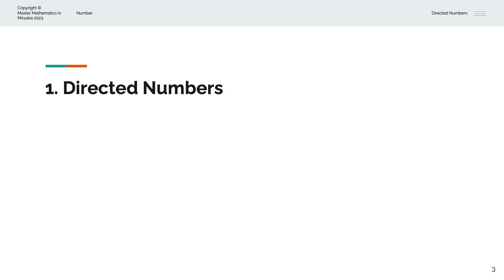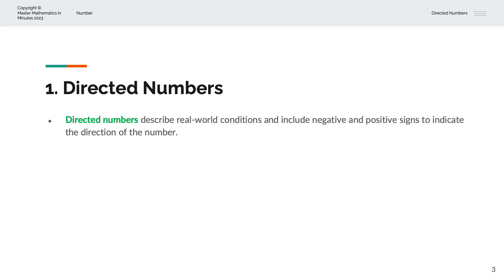So, what are Directed Numbers? Directed Numbers describe real-world conditions and include negative and positive signs to indicate the direction of the number.